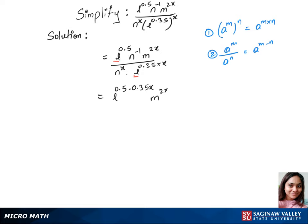Let's write M power 2x that remains the same, and we have the same case with N on top and bottom. We can use rule 2 and write this as N power minus 1 minus x. That's our final answer.